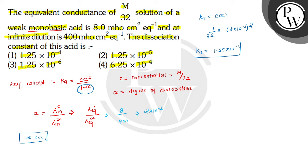So this is the value of dissociation constant of this acid. It is given in option second. Hence option second is the correct choice for this question. Hope you understood it well. All the best and thank you.